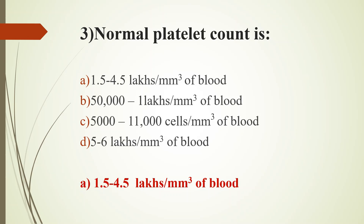For reference, RBC count in males is 4.7 to 6.1 million cells per microliter, and in females 4.2 to 5.4 million cells per microliter. WBC normal value is 4,500 to 11,000 cells per microliter.